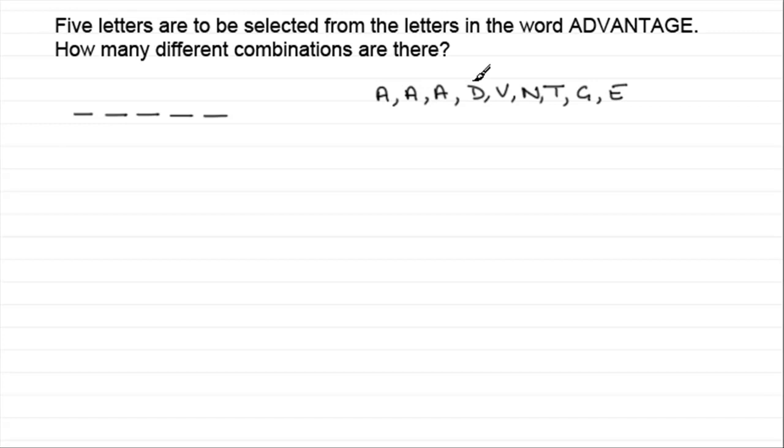In other words, what we've got here is six different values. Now, when it comes to working out the number of different selections, we've got to be very careful because of this problem of having a letter repeated. We're going to have selections or combinations where we get no A's at all in this selection here. There'll be times when there's just one A, two A's, and three A's. So what we need to do is look at each of these individual cases separately.